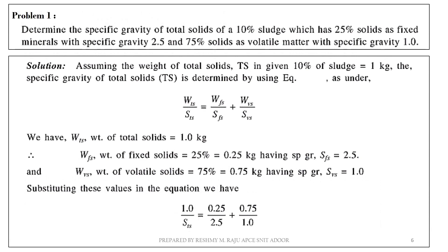Problem: Determine the specific gravity of total solids of a 10% sludge which has 25% solids as fixed minerals with specific gravity 2.5, and 75% solids as volatile matter with specific gravity 1. Given details: 10% total solids.